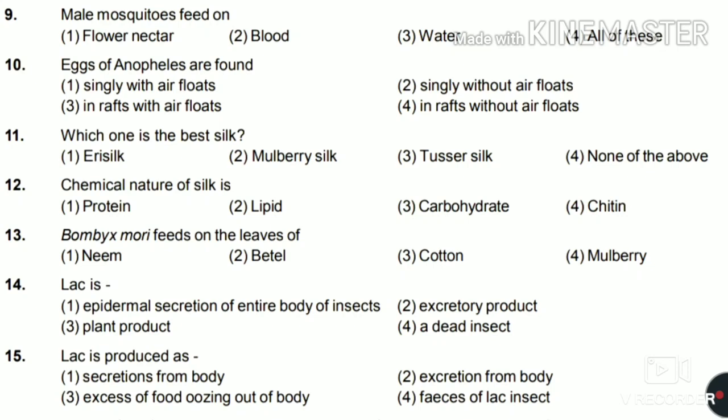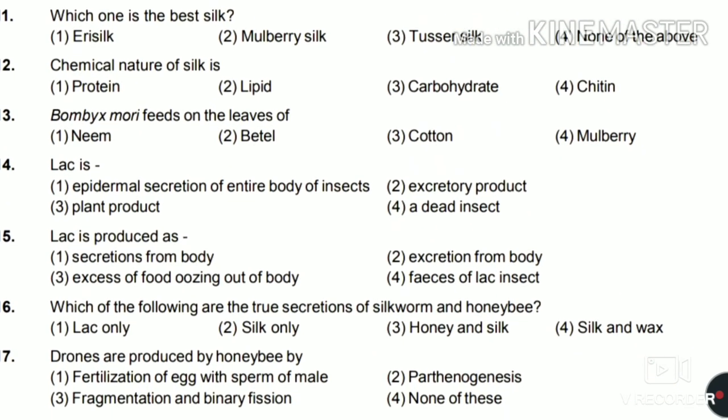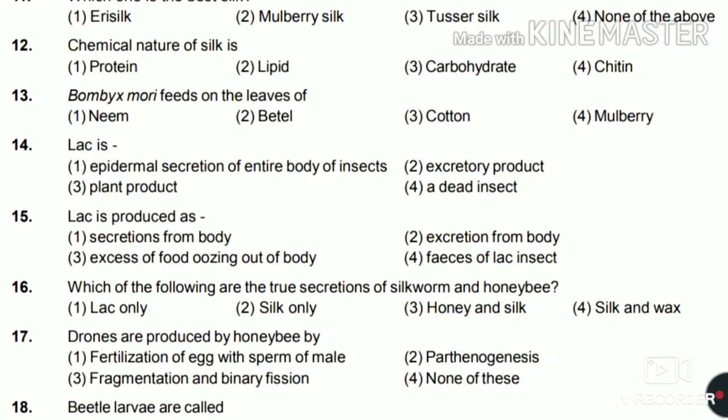Eleventh: which one is the best silk — airy silk, mulberry silk, tussar silk, or none of the above? The answer is mulberry silk. The silkworm fed on mulberry leaves produces mulberry silk, which is of the best quality. Twelfth: the chemical nature of silk is protein, lipid, carbohydrate, or chitin? The answer is protein. Thirteenth: Bombyx mori feeds on leaves of neem, beetroot, cotton, or mulberry? The answer is mulberry.